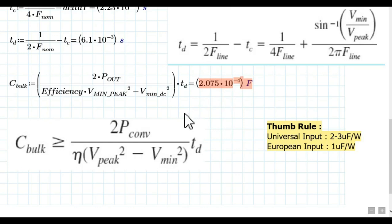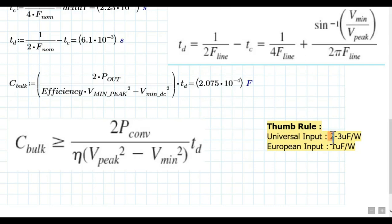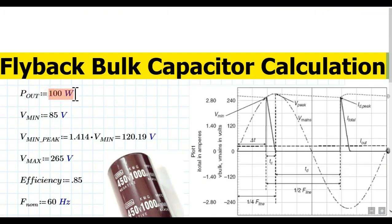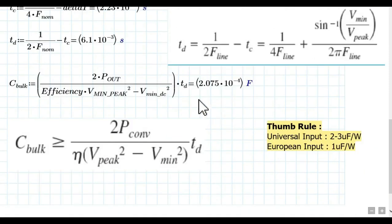For a universal input range (85 to 265 volt AC), a thumb rule states you need 2 to 3 microfarad per watt. For a 100 watt design, that means 200 to 300 microfarad. The calculated value of 207 microfarad falls within this range, confirming the result. For European input only, the thumb rule is 1 microfarad per watt, so only 100 microfarad would be needed for a 100 watt design.